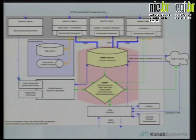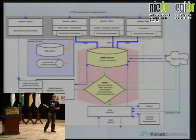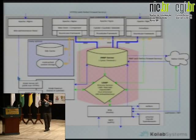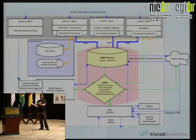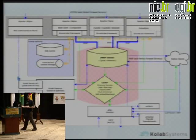All the data is stored in IMAP — the database is just for caching. Another advantage of that is that there are really easy tools — like if you have to migrate from one server to another, you just need to sync over your IMAP database and that's it. Then you have everything on your new server. So it makes migrations a lot easier.